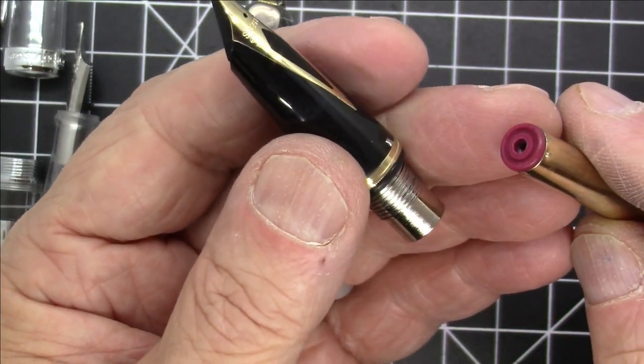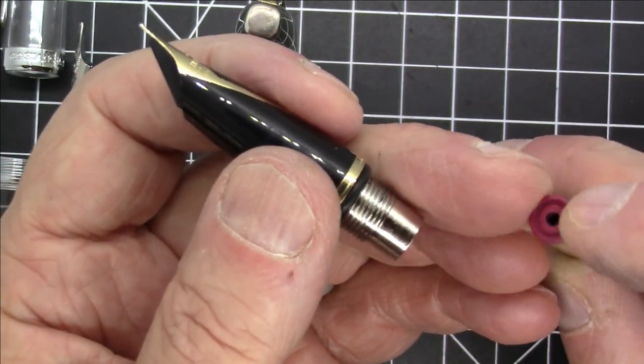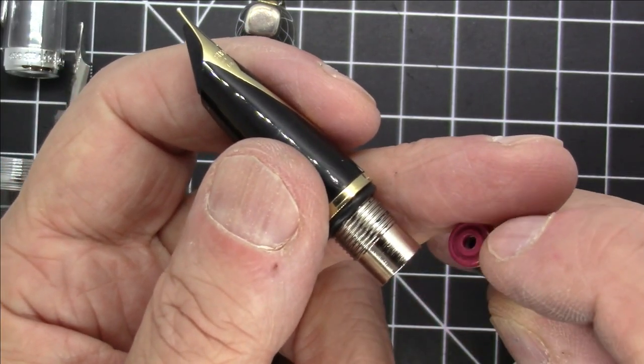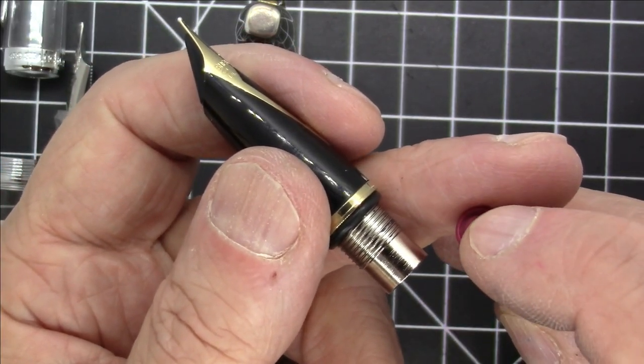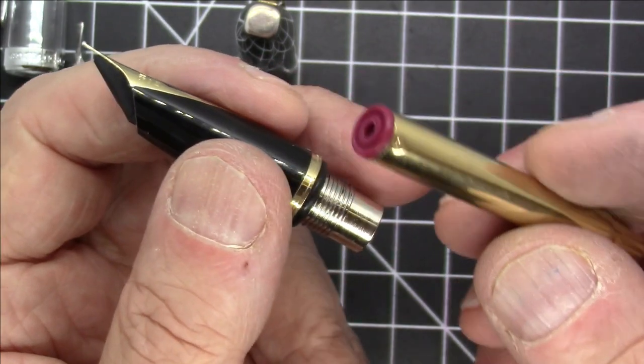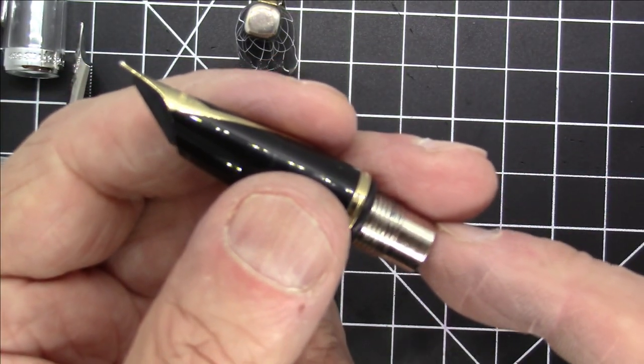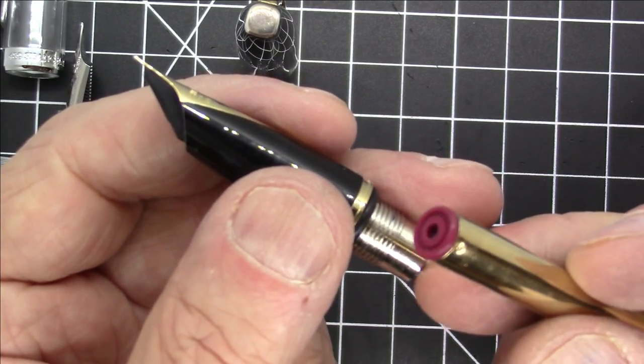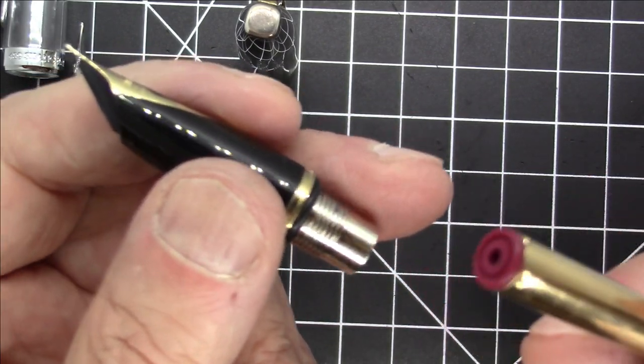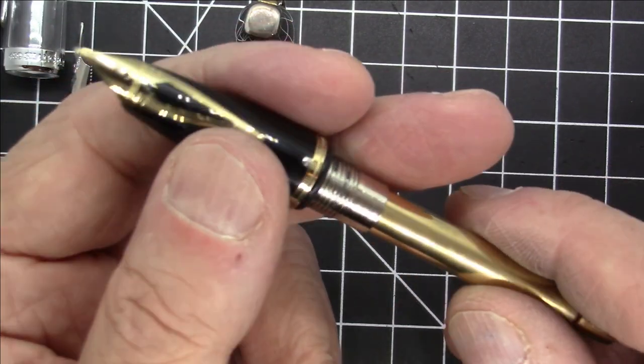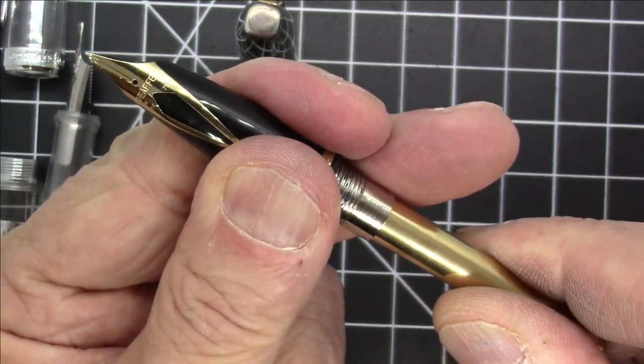You can remove this and then the cool thing that Sheaffer did was this interface here was exactly compatible with Sheaffer converters and Sheaffer cartridges. So I can remove this adapter and put a converter in there or put a cartridge in there or it can use the touchdown filler. So you have literally three different filling mechanisms on this one Sheaffer pen which was pretty cool.